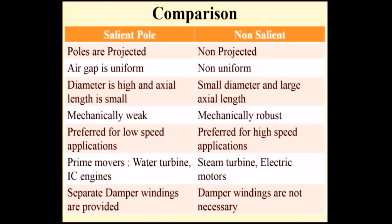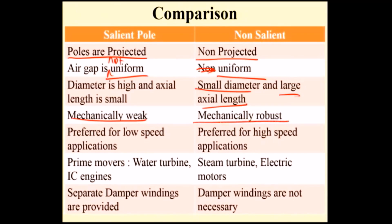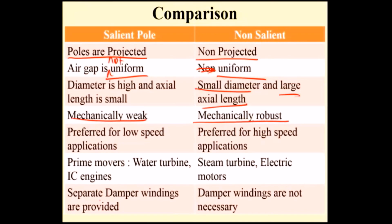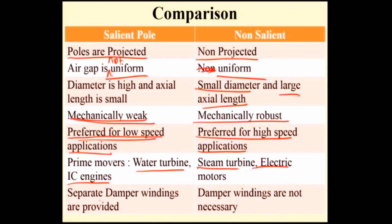Comparing both rotors: the salient pole rotor has projected poles, non-uniform air gap, large diameter, small axial length, and is mechanically weak — making it suitable only for low-speed applications. The non-salient pole rotor has non-projected poles, uniform air gap, small diameter, large axial length, and is mechanically robust — suitable for high-speed applications. Low-speed prime movers such as water turbines and IC engines are used with salient pole rotors, while steam turbines and electric motors are used with non-salient pole rotors. Damper windings are required for salient pole rotors but are not necessary for non-salient pole rotors.